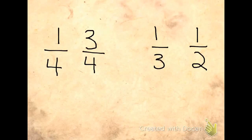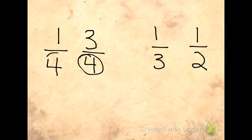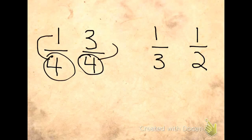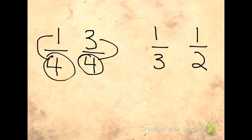In past lessons, we have learned how to compare fractions. If the denominators are the same, then we look at the numerators. If the denominators are the same, we know that they are the same equal parts. So, the bigger numerator means that it is the bigger fraction.